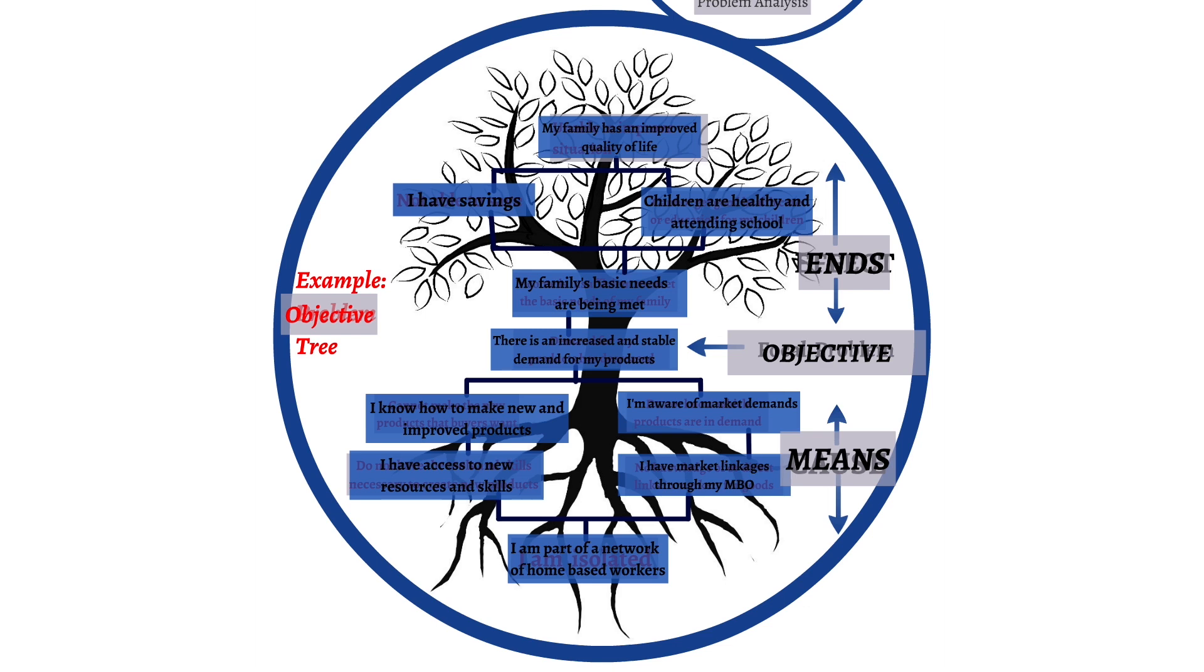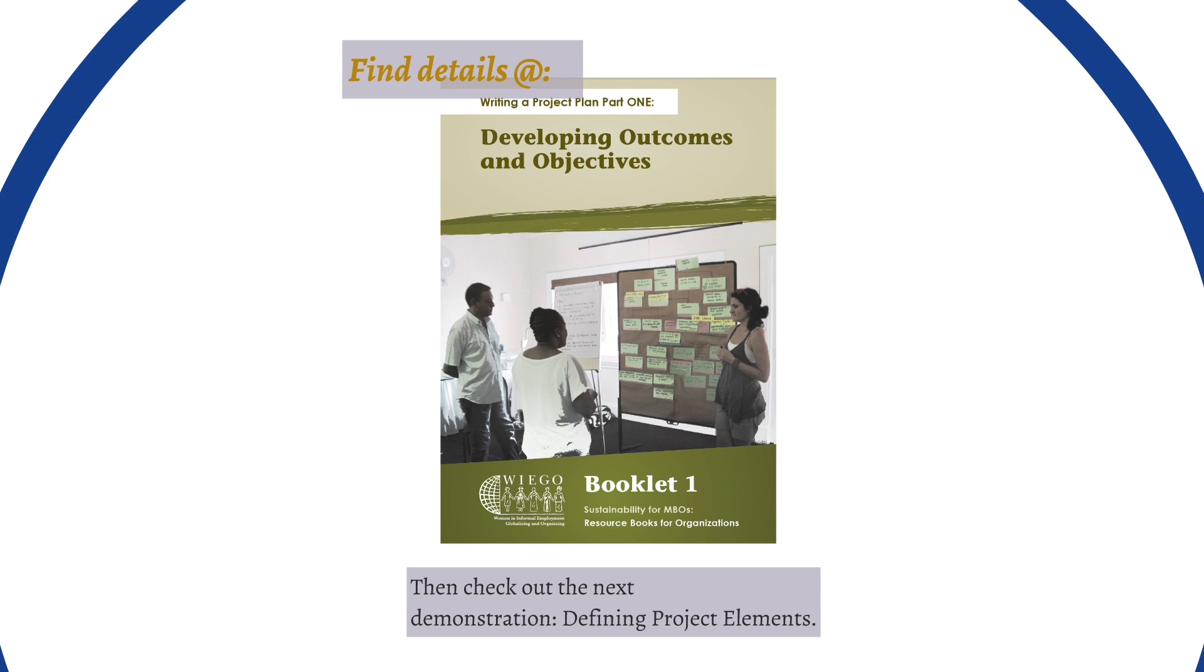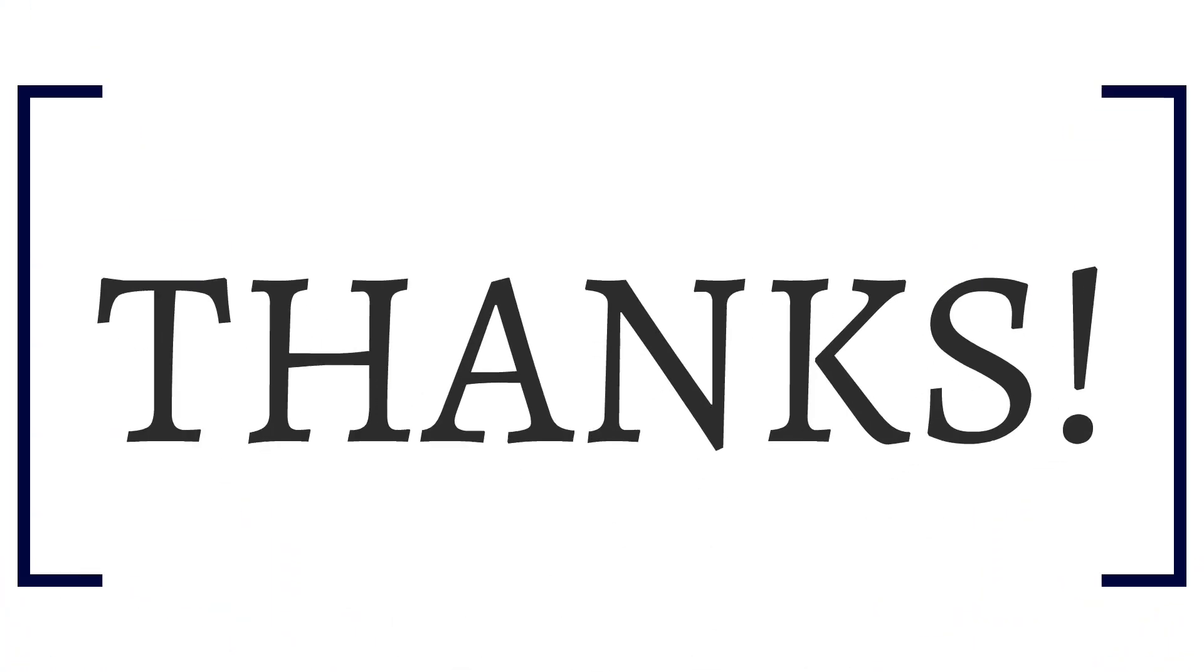So now our objectives tree is complete and this sample has touched on a quick demonstration of step 2 problem analysis and step 3 objectives analysis. I encourage you to refer to booklet 1 and go through the steps with your planning team on how to conduct a participant analysis and alternatives analysis also. You'll find those in booklet 1 and also to find more details on how to conduct a problem analysis, how to build a problem tree and objectives trees and some techniques and rules that I haven't covered in this demonstration. So please refer to booklet 1 and check out our next demonstration which will be on defining the project elements where we're going to take the objectives tree one step further and actually start writing the project plan. In the meantime thanks for listening talk to you soon.